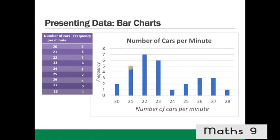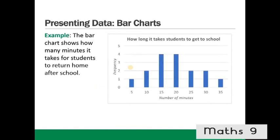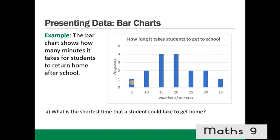The bar chart is really good because it's easy to see which number of cars was the most common. Here's another example: the bar chart shows how many minutes it takes for students to return home after school. What's the shortest time a student could take to get home? We look at the graph — the smallest number of minutes is 5, so it's 5 minutes.